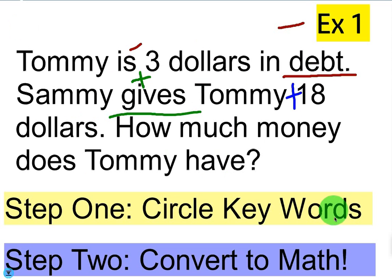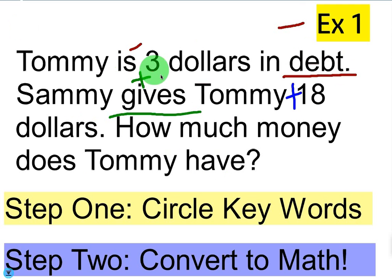We're going to go back through and read this together, and as we do, we're just going to notate some stuff in and around keywords. Tommy is $3 in debt. What does debt mean? That means you don't have the money, you owe the money. When you owe somebody money, that is a negative number. So I underline the word debt and put a negative sign next to 3.